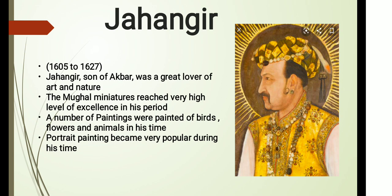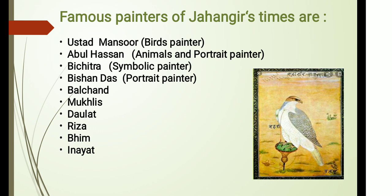Famous painters of Jahangir's time include Ustad Mansoor, a bird painter — you can see a bird painting on the screen done by Ustad Mansoor. The second is Abul Hassan, an animals and portrait painter. Third is Vichitra, a symbolic painter. Fourth is Bishandas, a portrait painter. Fifth is Balchand, sixth is Mukhlis, seventh is Dalat, eighth is Riza, ninth is Bhim, and the last is Inayat. Under Jahangir's patronage, painting acquired great charm, refinement, and dignity. He had great fascination for nature and delighted in portraits of birds, animals, and flowers.